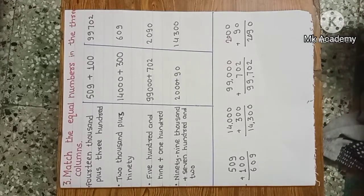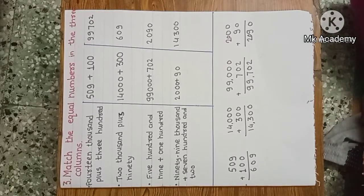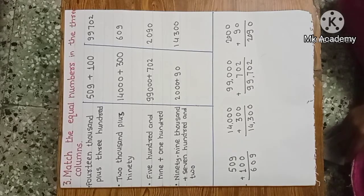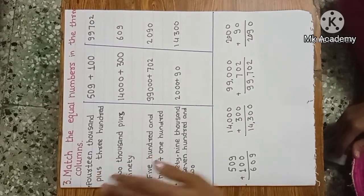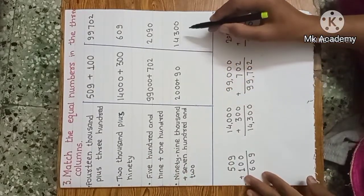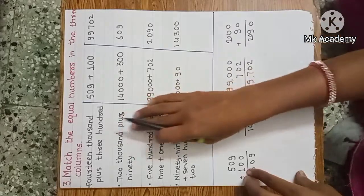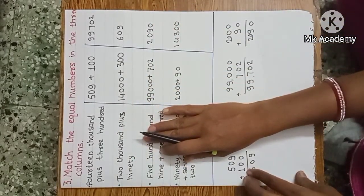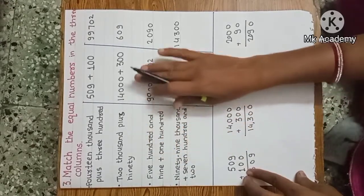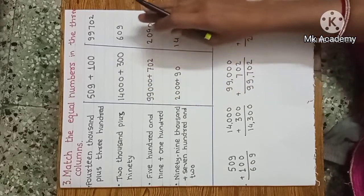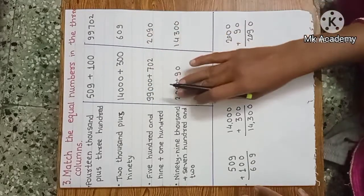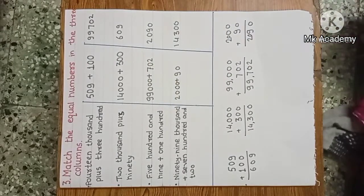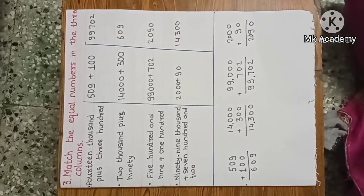Next question: Match the equal numbers in three columns. We have to match the pairs. In the first column we are given the addition in words, in the second column we are given numbers, and in the third column we are given the answer of the addition. We have to write down the correct matching.